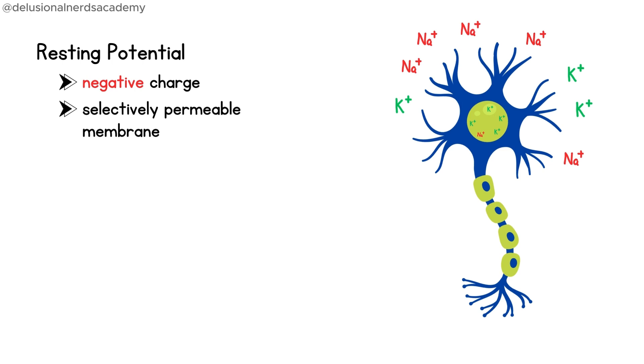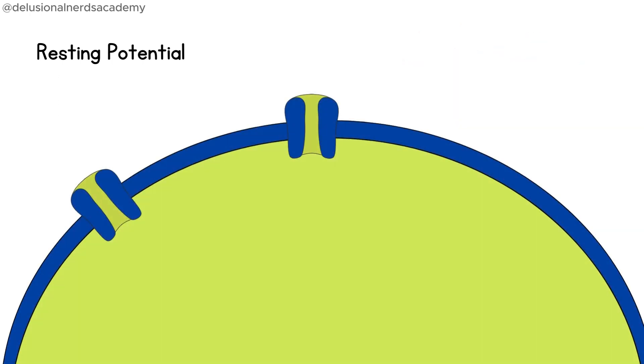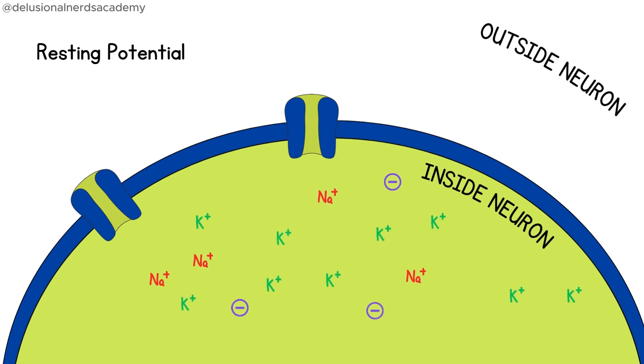This selective permeability is crucial for maintaining the resting potential. While at rest, the inside of the neuron has a lot of potassium ions and negatively charged molecules. The outside has many sodium ions.